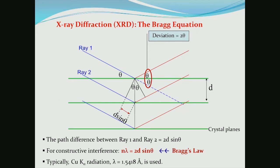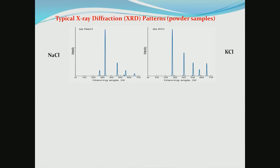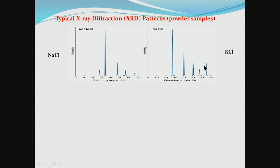Typically the X-ray wavelength used is the copper K-alpha line with wavelength 1.5418 angstroms. A typical diffraction pattern for a crystalline material — here sodium chloride and potassium chloride, two well-known cubic compounds — shows 2-theta on the X-axis and diffracted intensity on the Y-axis. The XRD pattern shows a small number of lines, characteristic of a highly symmetric cubic structure.